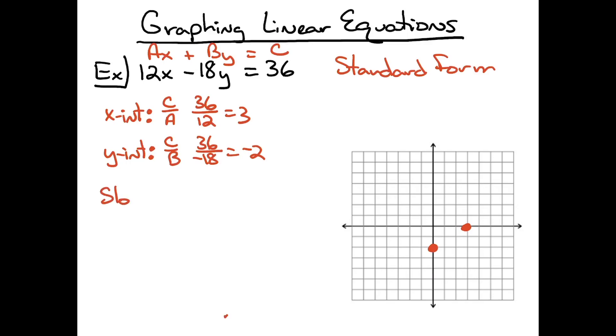The slope formula when in standard form is given by negative a over b. So my a is 12, so negative 12 over b, which is negative 18. A negative divided by a negative is a positive, so that definitely makes my slope positive. I would need to reduce that to lowest terms. So 6 goes into both of those: 12 divided by 6 is 2, and 18 divided by 6 is 3. So I'm going to have a slope of two-thirds.